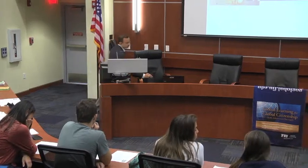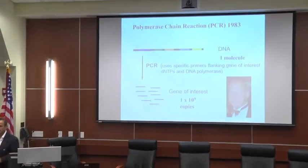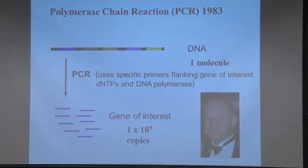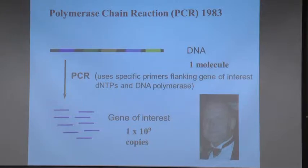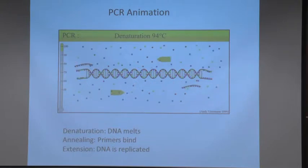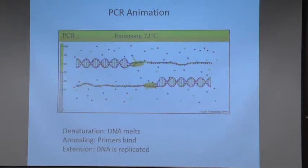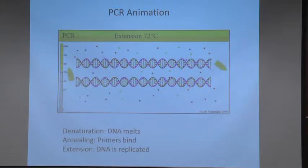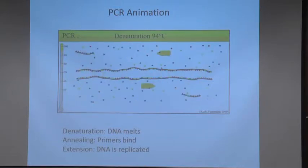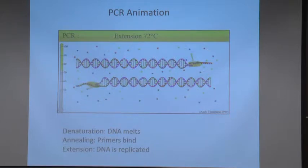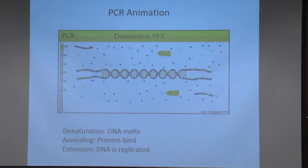Another key technology is the polymerase chain reaction, or PCR, developed by Kary Mullis in 1983. This technology allows you to make multiple copies of the same DNA through the steps of denaturation, annealing, and extension. It is a fundamental technology used in virtually all biotechnological work today — whether you want to see which genes are highly expressed or less expressed.